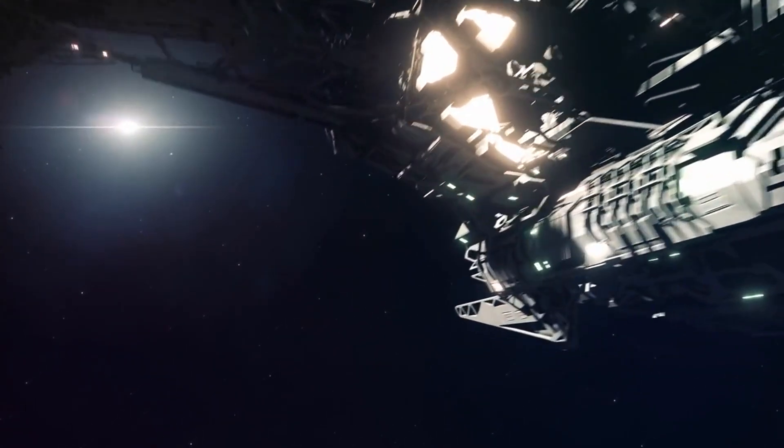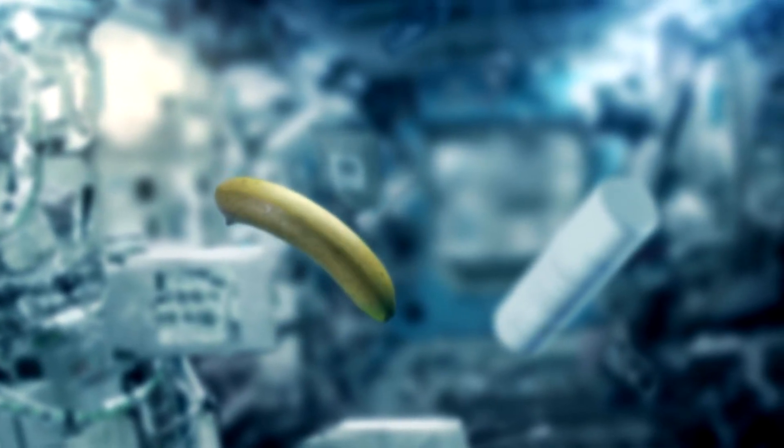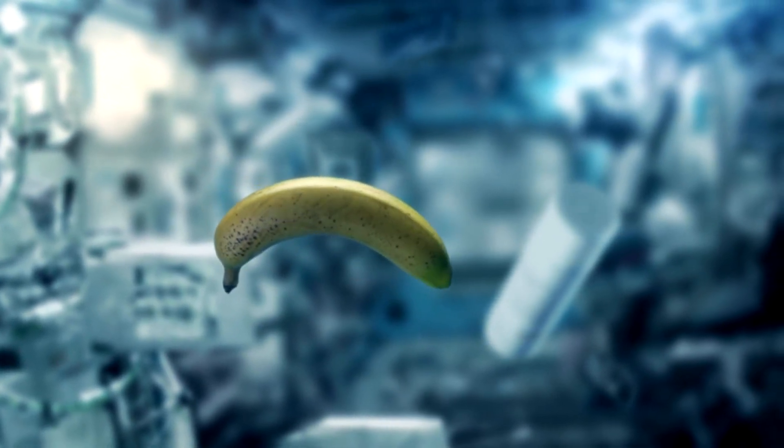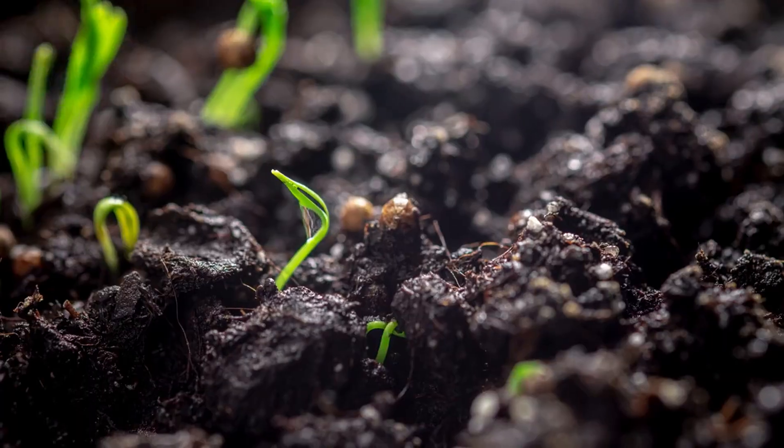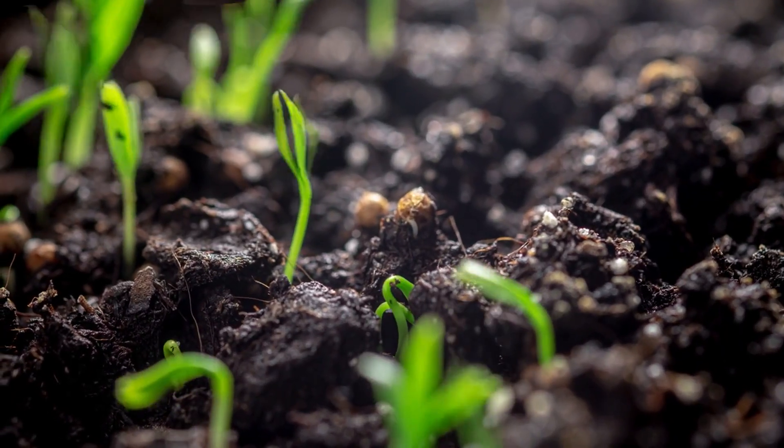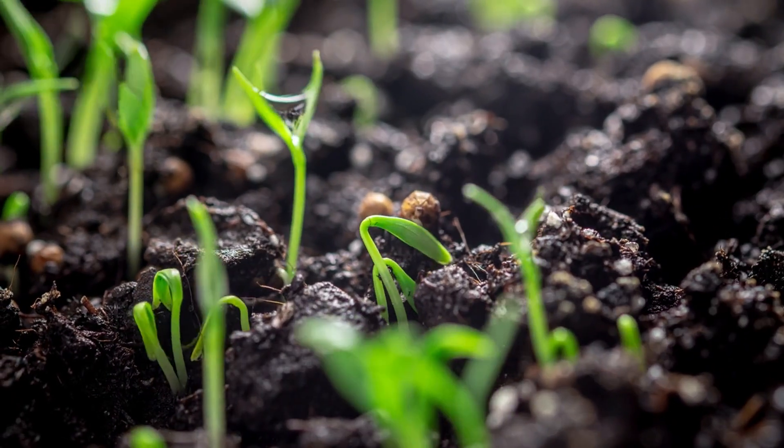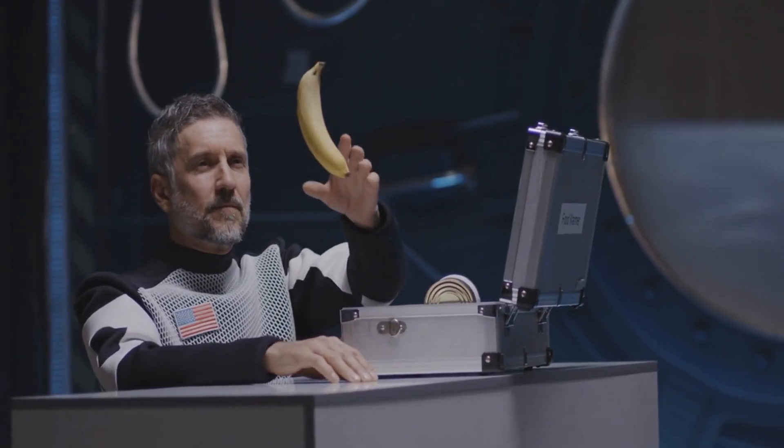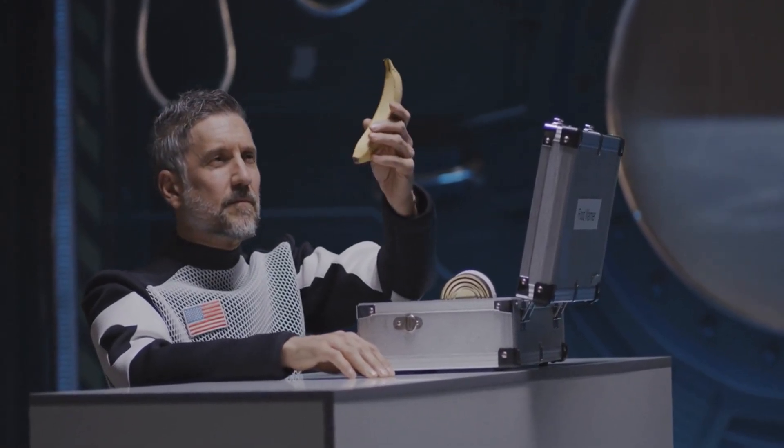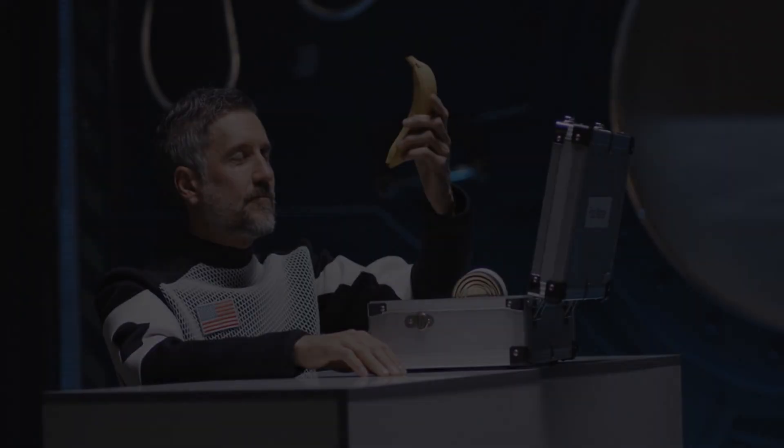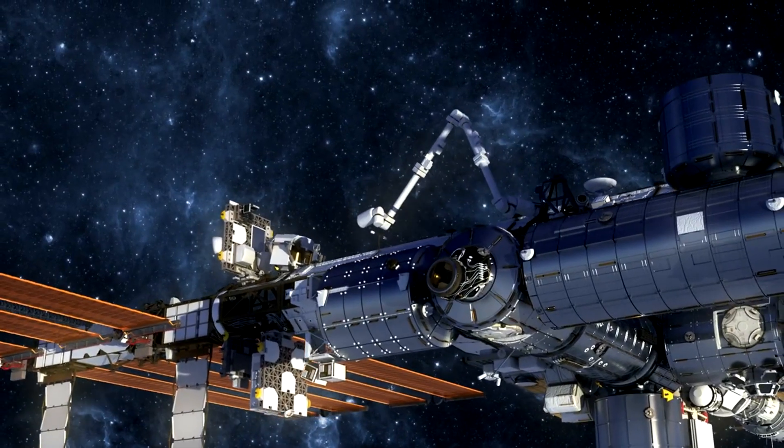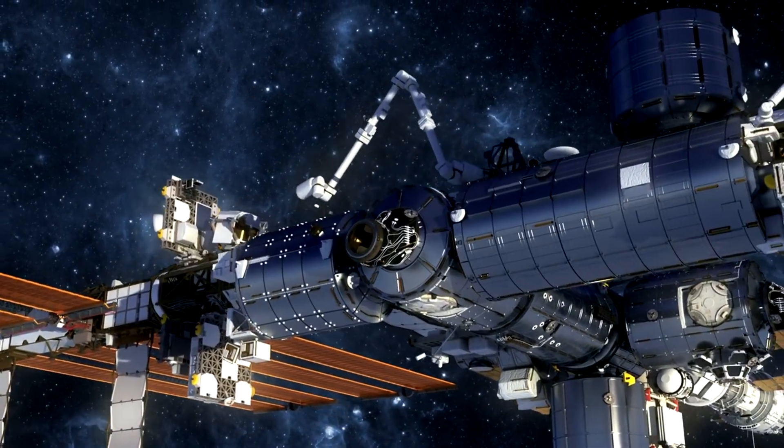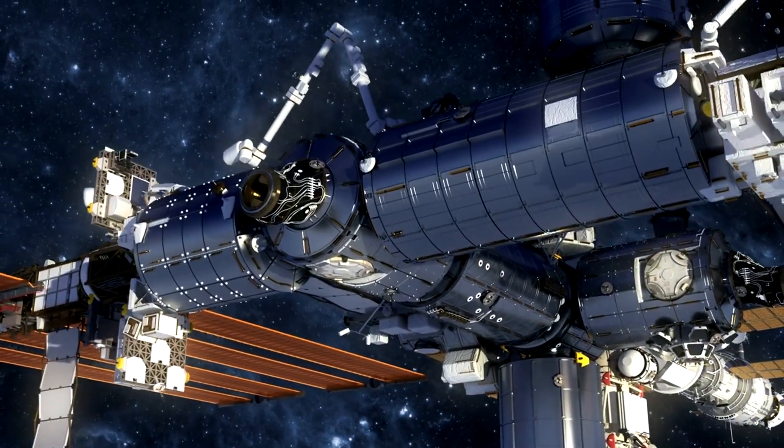Food and water, basic necessities for survival, present another insurmountable challenge. On Earth, these resources are abundant and replenished by natural cycles. In space, every ounce of food and every drop of water must be carefully rationed and stored. Recycling systems like those on the International Space Station are limited in efficiency and prone to breaking down.